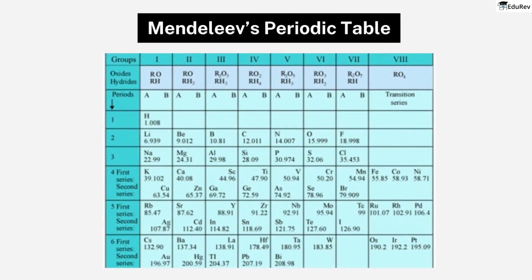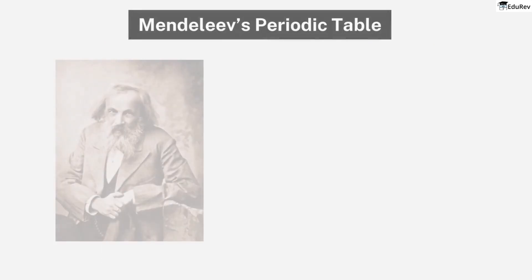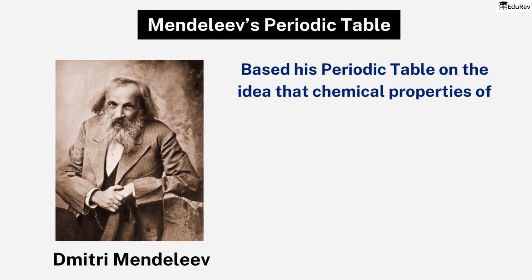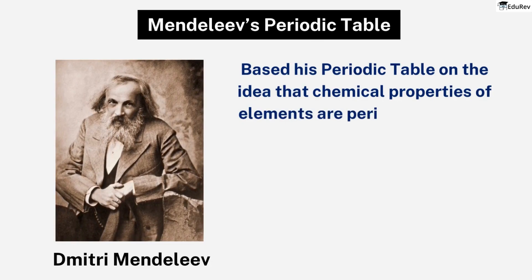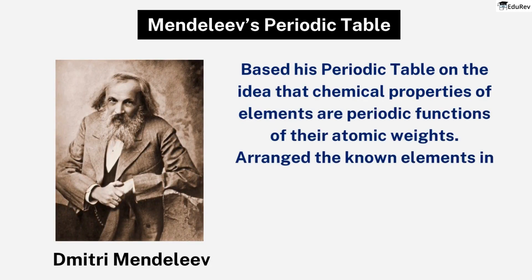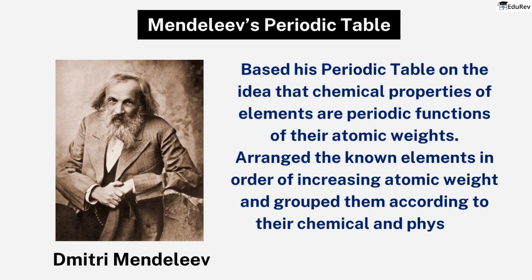Mendeleev published his version of the periodic table in 1869, and it quickly became a fundamental tool for chemists worldwide. He based his periodic table on the idea that the chemical properties of elements are periodic functions of their atomic weights. Mendeleev arranged the known elements in order of increasing atomic weight and grouped them according to their chemical and physical properties.